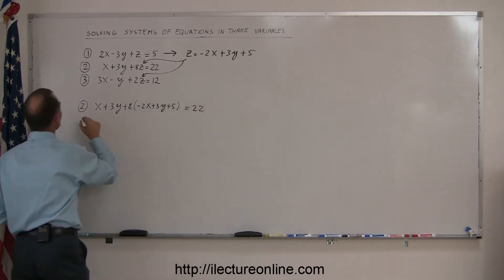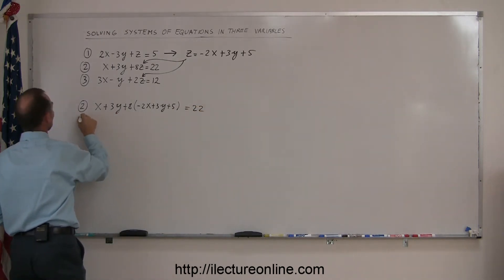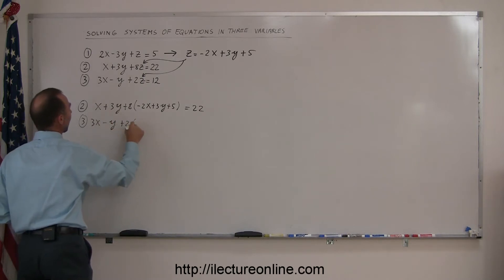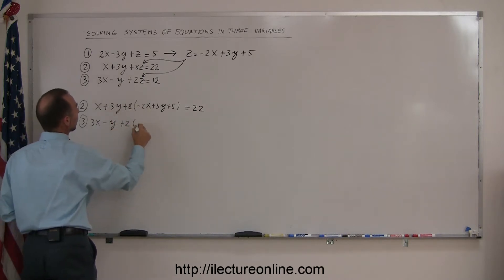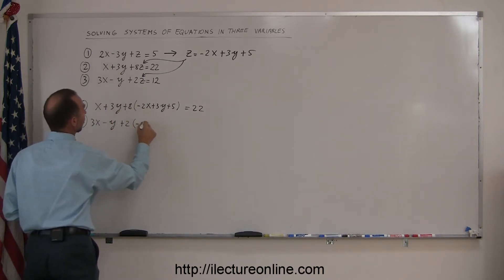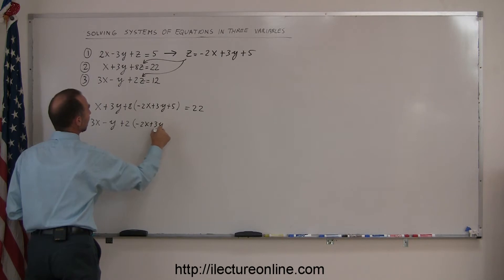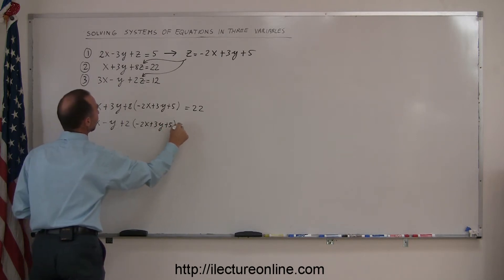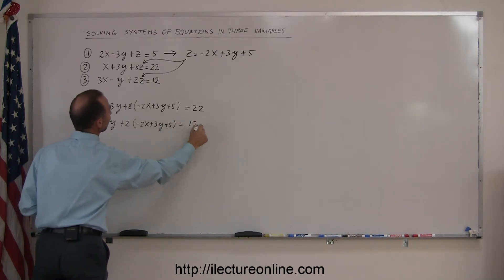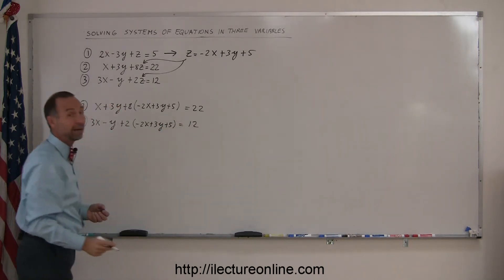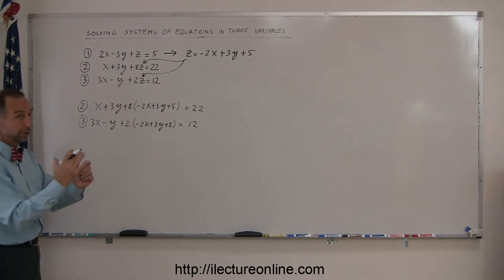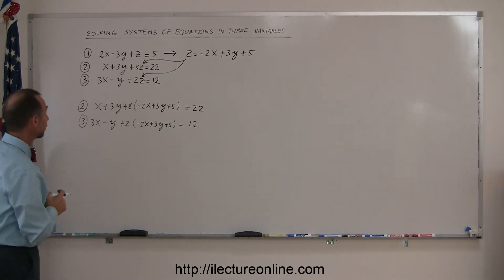And the third equation: 3x minus y plus 2 times z, and z is equal to minus 2x plus 3y plus 5, and that should equal 12. Now I have two equations that only have two variables, and I'm going to combine those.